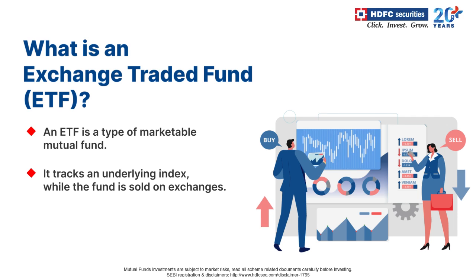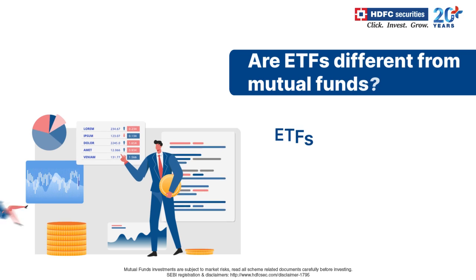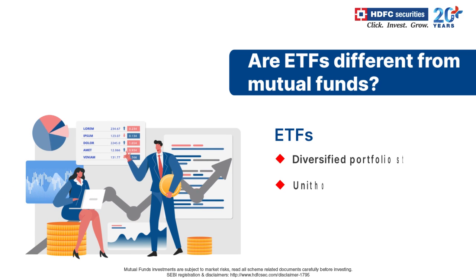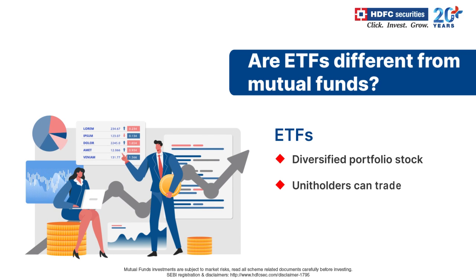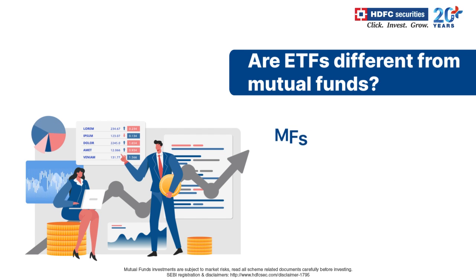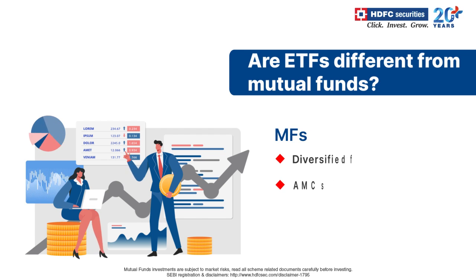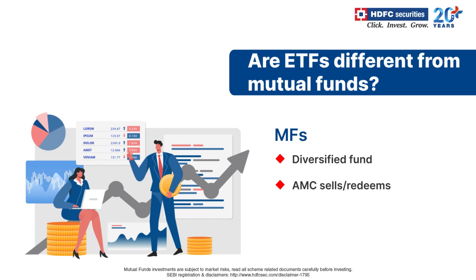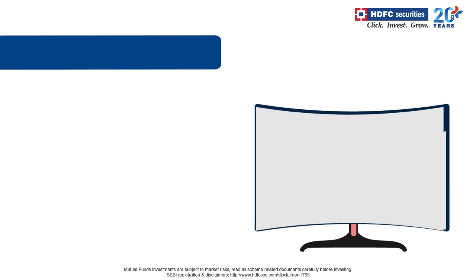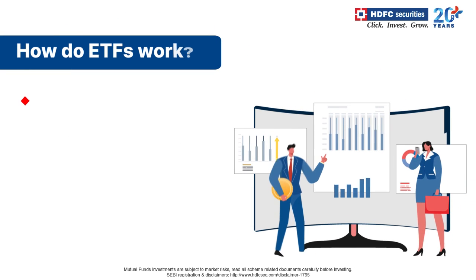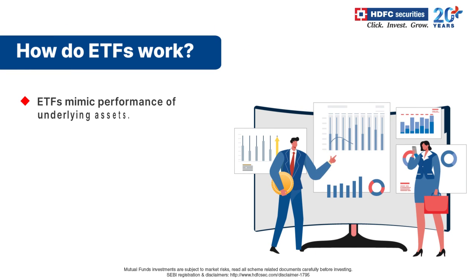ETFs are bought and sold over exchanges like common stock. When it comes to ETFs, DMAT account holders can practically buy a diversified fund as a single stock. Unlike mutual funds, the counterparty is always other unit holders instead of an asset management company on exchange terminals.